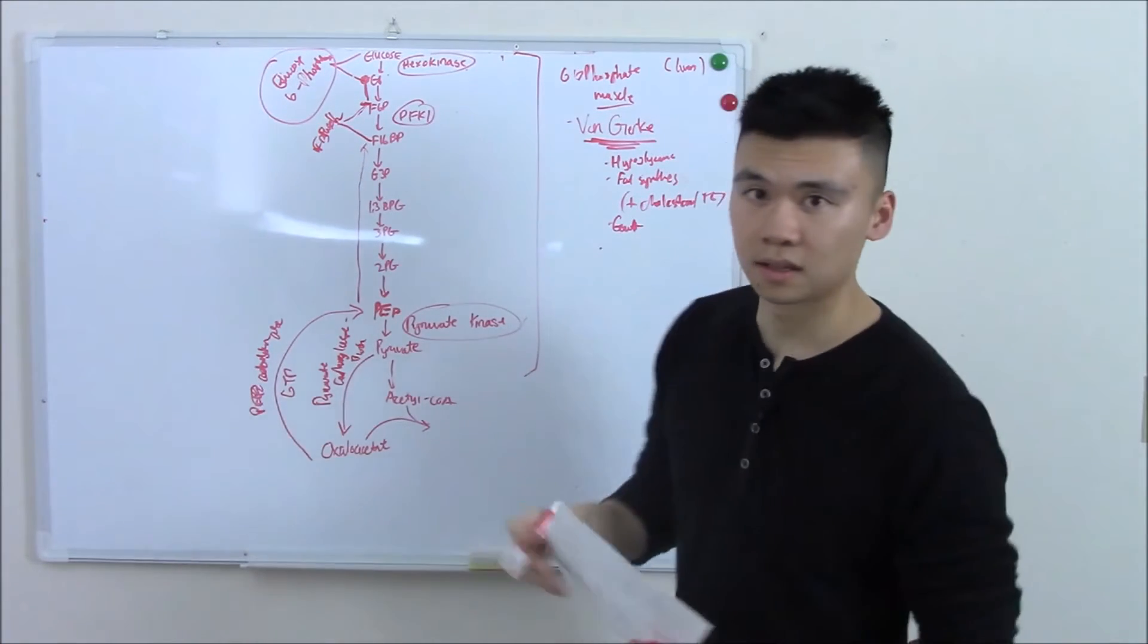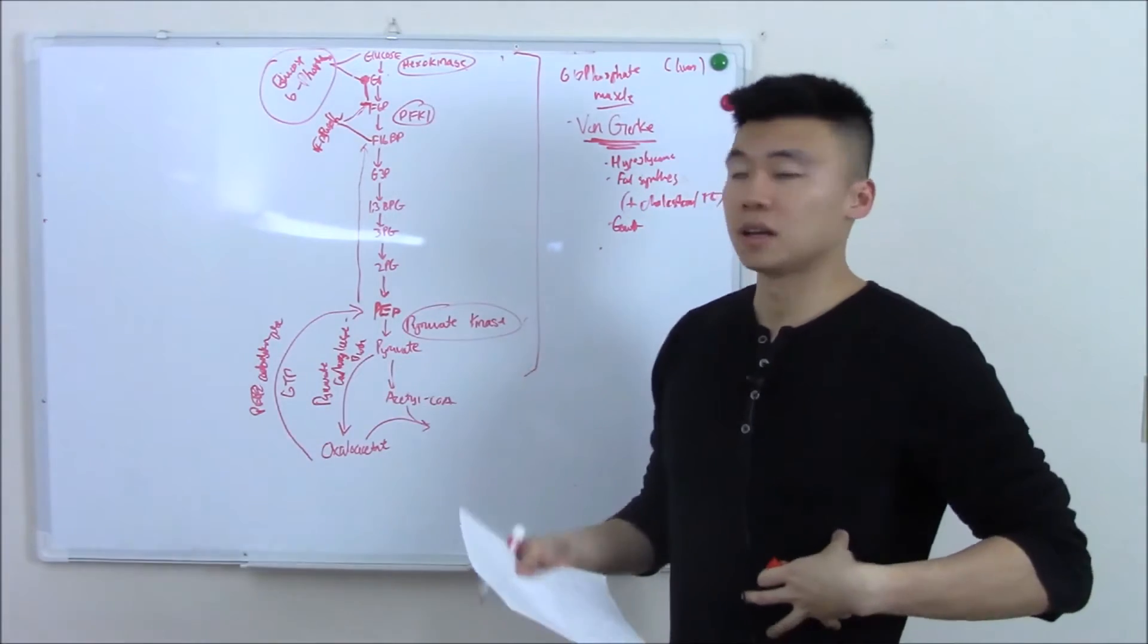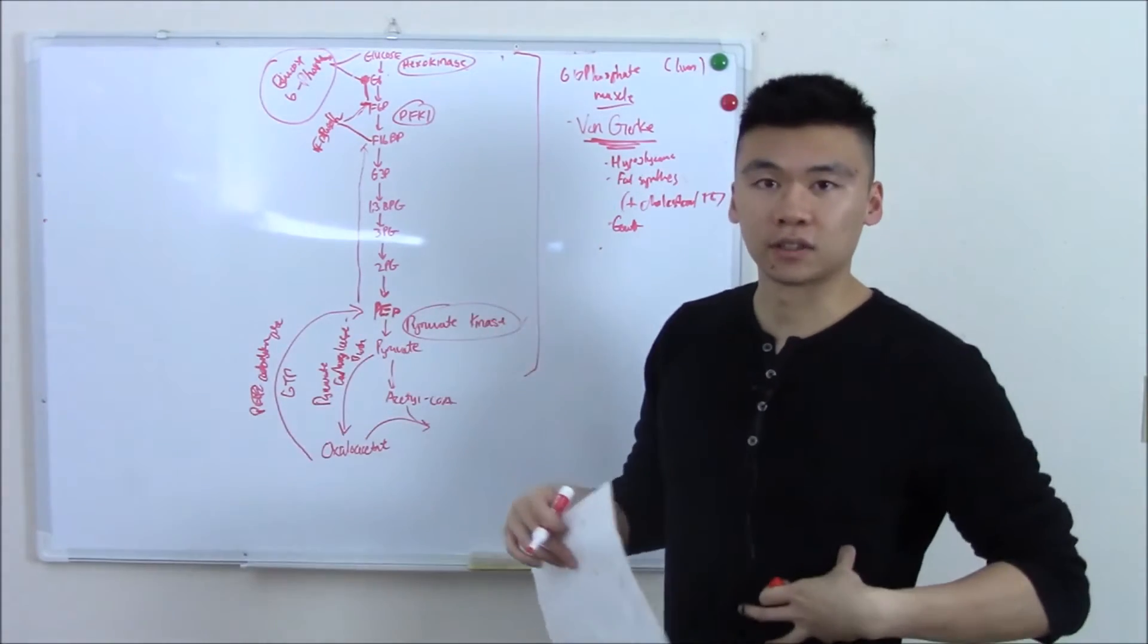Probably the most common sign you'll see besides the hypoglycemia is that because you can't get the glucose out of your liver, you can have hepatomegaly.